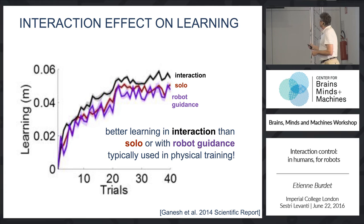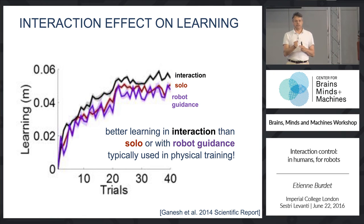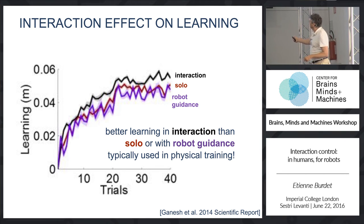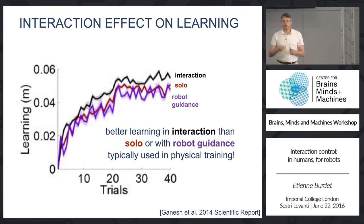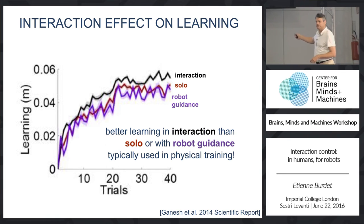We see some learning here, specifically learning of visual-motor rotation. What we see is that when you have this physical interaction between humans, you learn better and faster than when you train alone, or when you train with typical robotic guidance currently used for stroke patients or sports training. From that, we see that there is something to gain and something to understand.